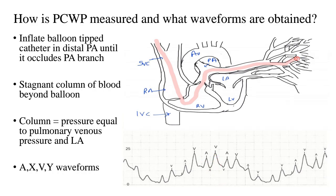The A wave represents atrial contraction, which means the patient needs to be in sinus rhythm to generate it. The A wave is followed by the X descent, which occurs during ventricular systole when the left atrium is relaxing. It is essentially a pressure drop in the left atrium during systole when the mitral annulus descends. So when the mitral annulus descends during early ventricular systole and the LA is relaxing, you get this negative wave.